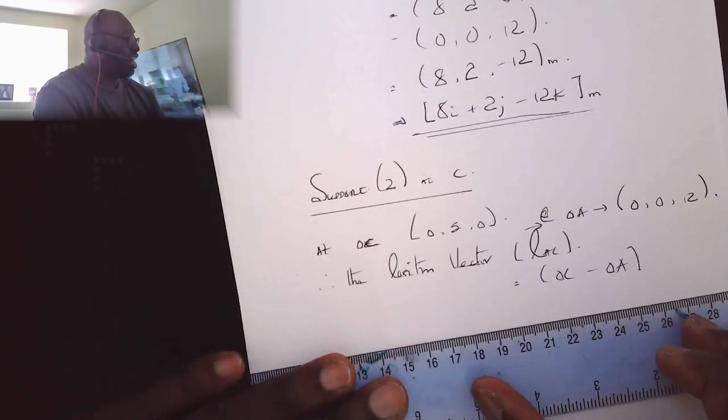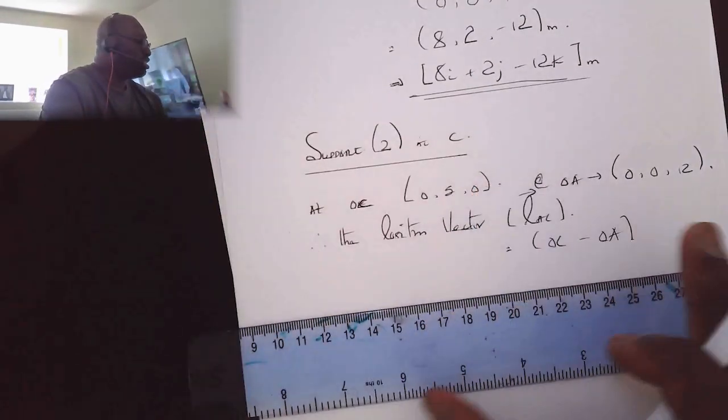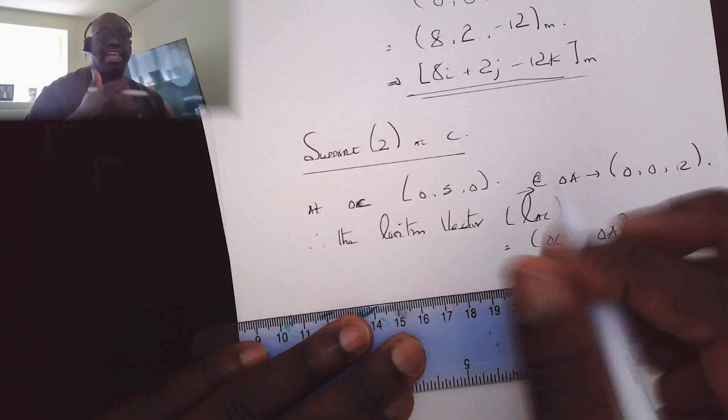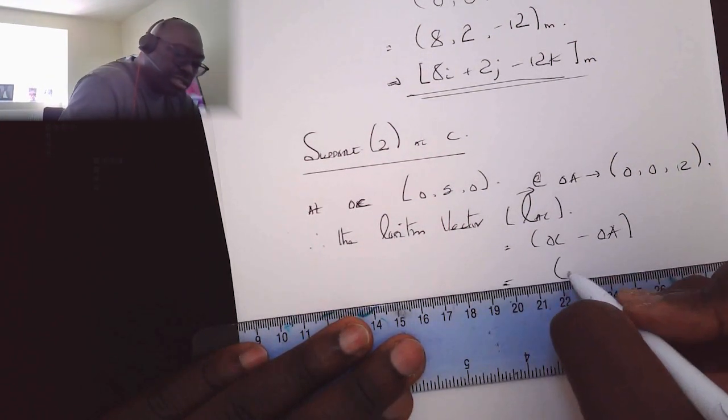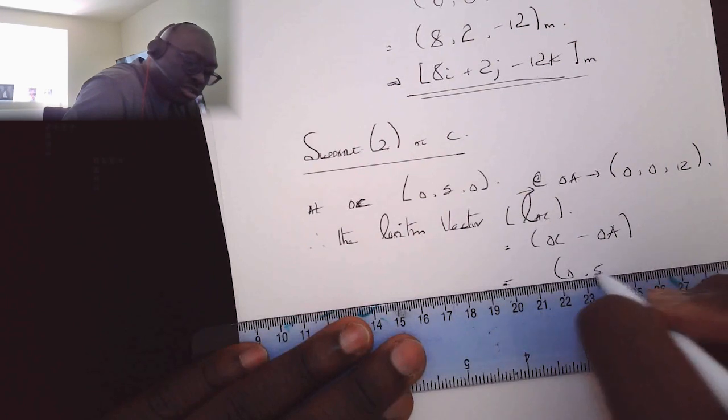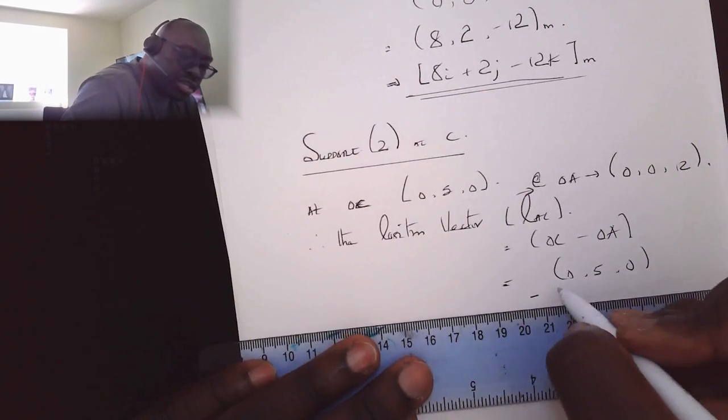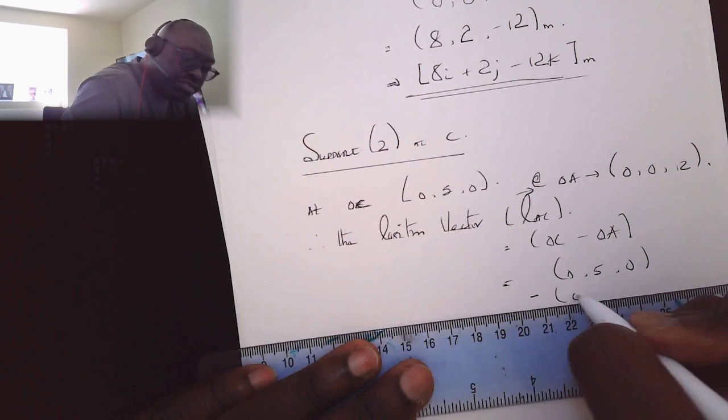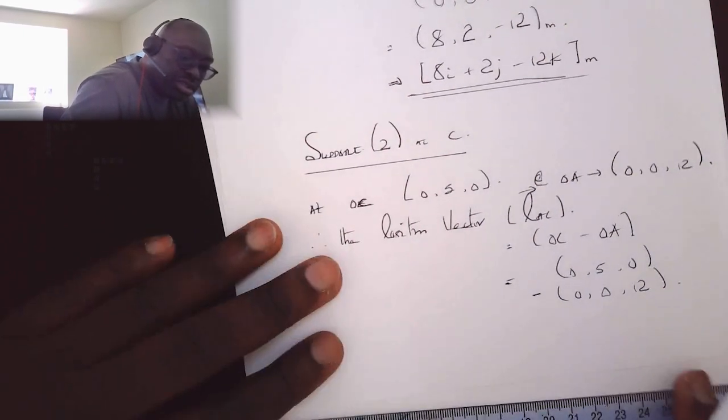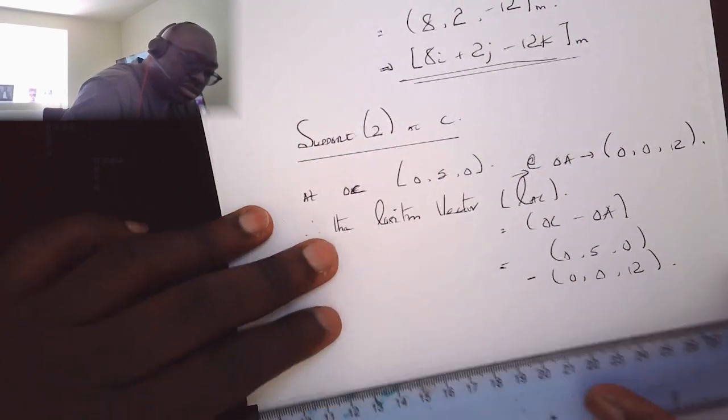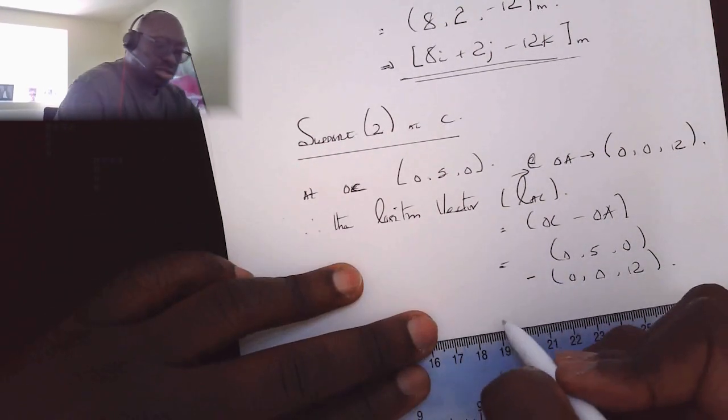And this will be given, so again we're deducting the i's from the i's, the j's from the j's, and then the k's from the k's. So this becomes naught i plus five j minus twelve k meters.